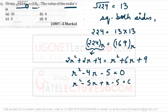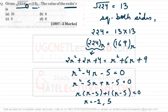Factorizing to find the value of r gives two values: −1 and 5. Since the base of a number system cannot be negative, we neglect −1. So the right answer is 5, which matches one of the options.